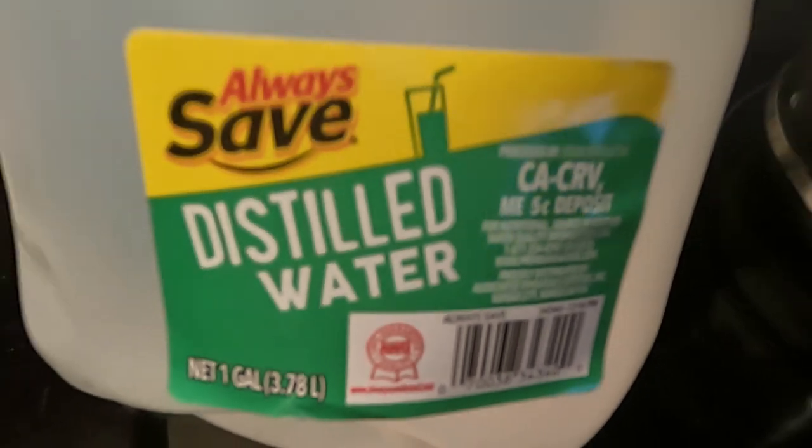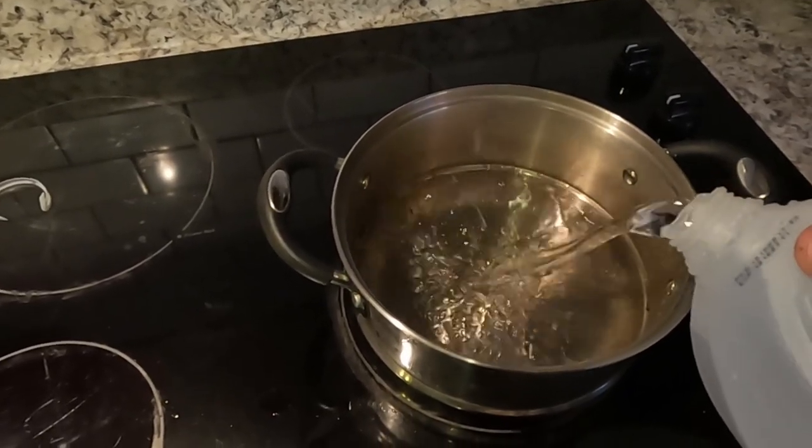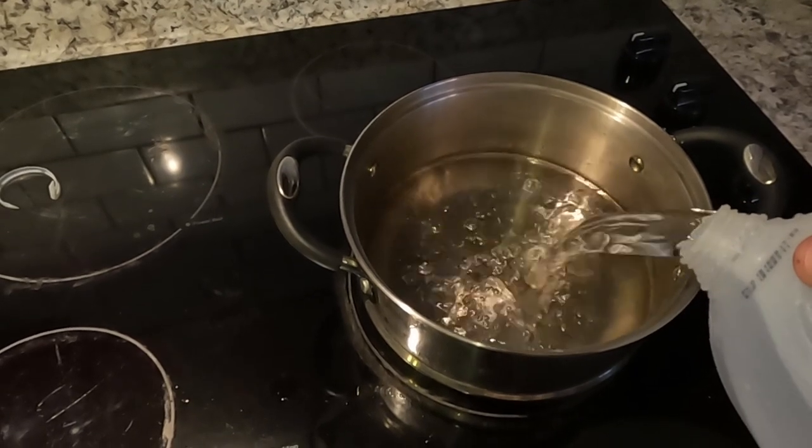So we are going to try a boiling and carding method. I do not have a carding wheel, but we're going to try the 4-ought steel wool technique. And before we get started removing the lever from the gun, we're going to start boiling some distilled water because that's what we're going to use to boil the lever in once we get it removed.